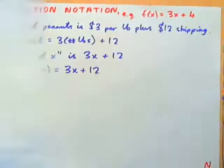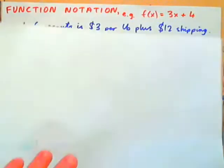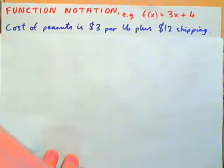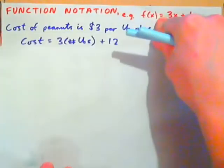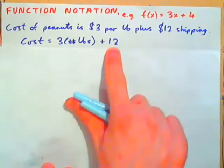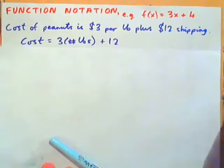So, let's begin. Cost of peanuts, for example, is $3 per pound plus $12 shipping. So, we would say that the cost equals 3 times the number of pounds plus $12. So, if you got 10 pounds, it would be 30 plus 12, $42.